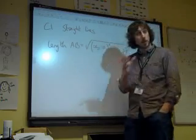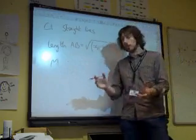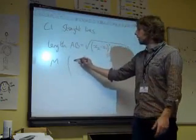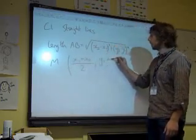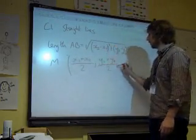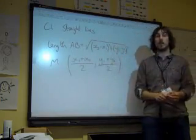We also need to know about the midpoint, the coordinate of the point halfway between two points. And then you take the average of the x coordinates and the average of the y values. So x1 plus x2 over 2, y1 plus y2 over 2.